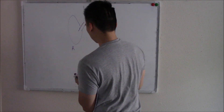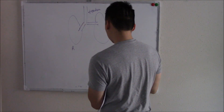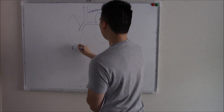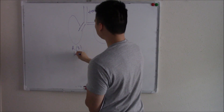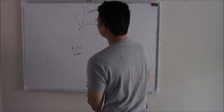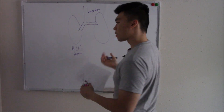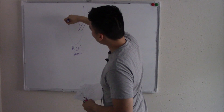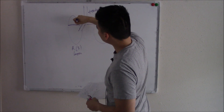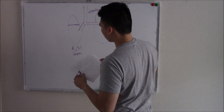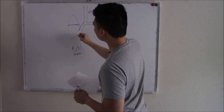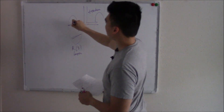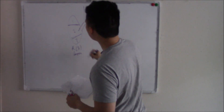Your right lung has three lobes and it is larger. It has a horizontal fissure and an oblique fissure, and that splits it into three lobes — one, two, three.